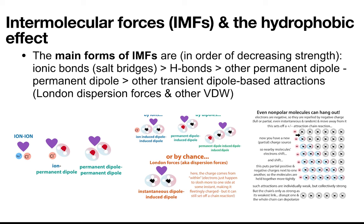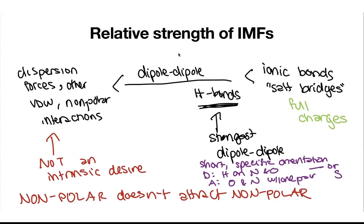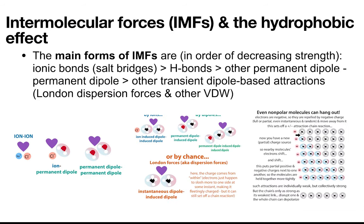There are four main types of intermolecular forces in biochemistry. We have van der Waals, dispersion forces, London dispersion forces — lots of different names for these interactions. What they have in common is that they involve interactions between molecules that don't normally have a charge or even a partial charge — a dipole.